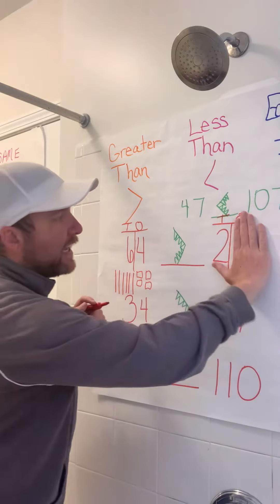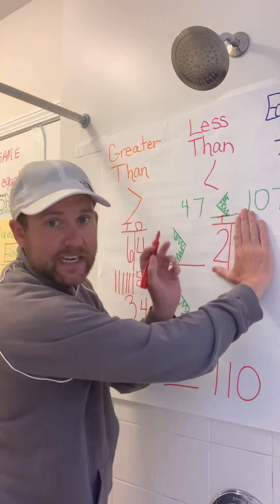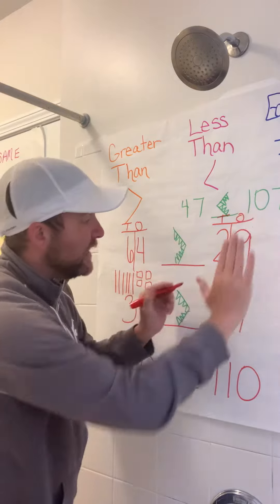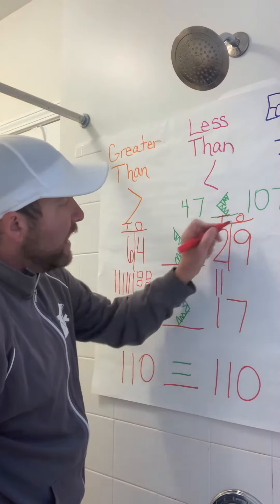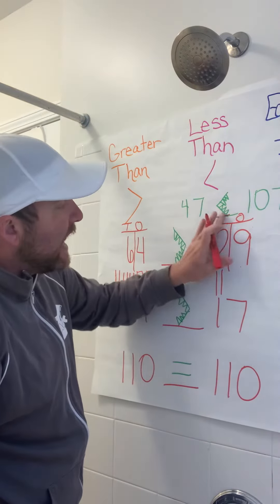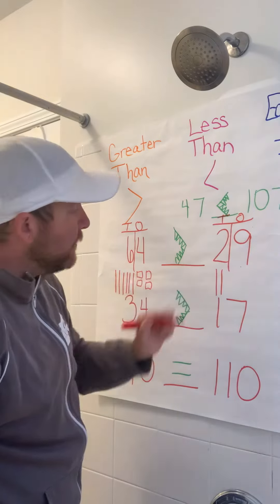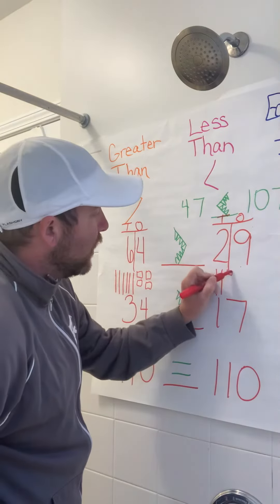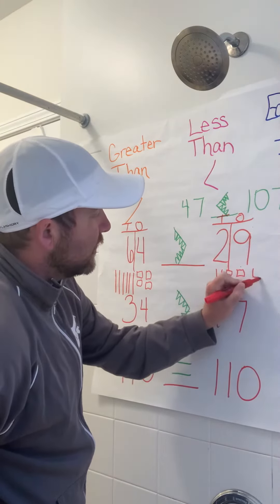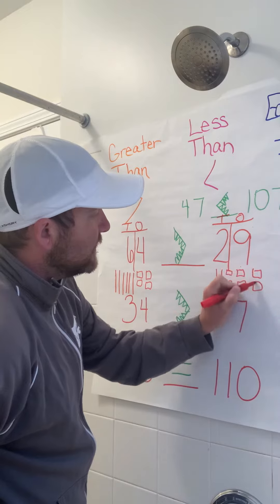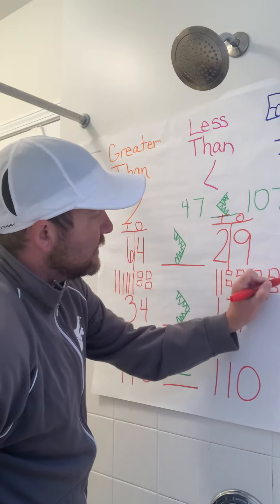And then for 29, I cover up the ones and I see I have 2 tens, so I need 2 rods: 10, 20. And I need 9 units: 1, 2, 3, 4, 5, 6, 7, 8, 9.